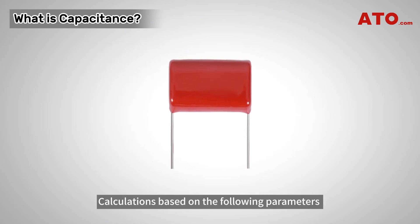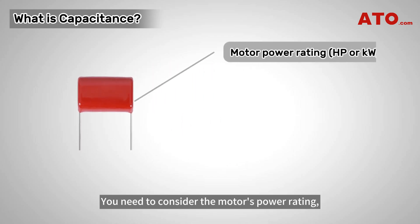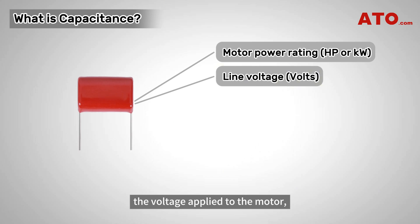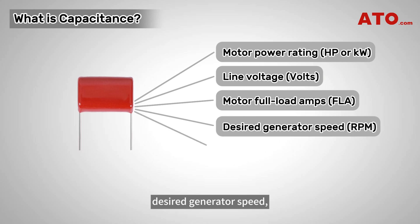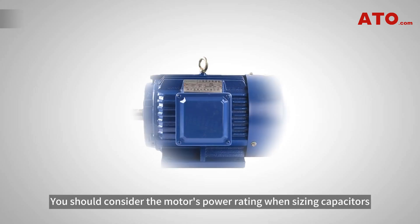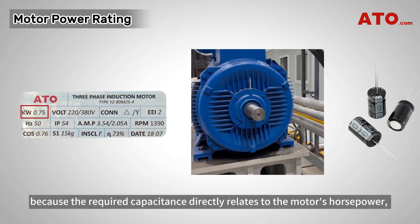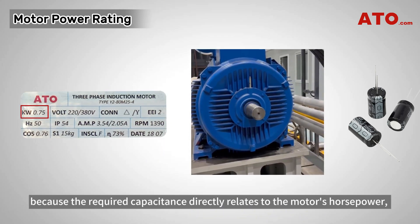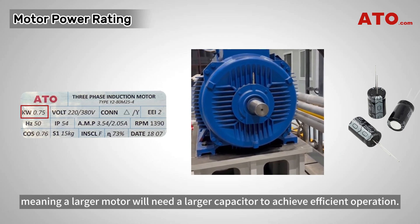Calculations based on the following parameters will guide you in selecting the right capacitor size. You need to consider the motor's power rating, the voltage applied to the motor, motor full load current, desired generator speed, and motor power factor, as well as several other factors. You should consider the motor's power rating when sizing capacitors because the required capacitance directly relates to the motor's horsepower, meaning a larger motor will need a larger capacitor to achieve efficient operation.